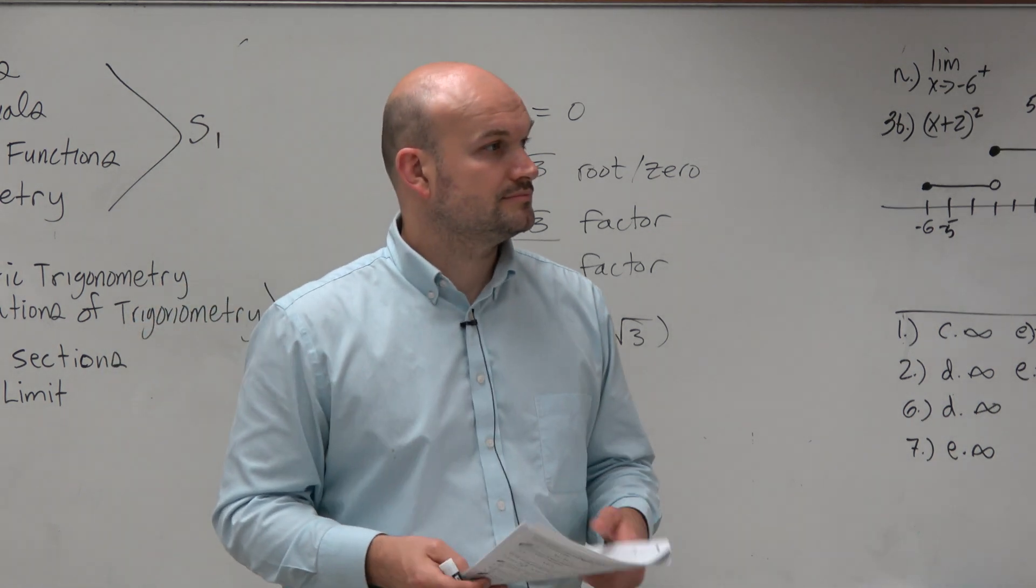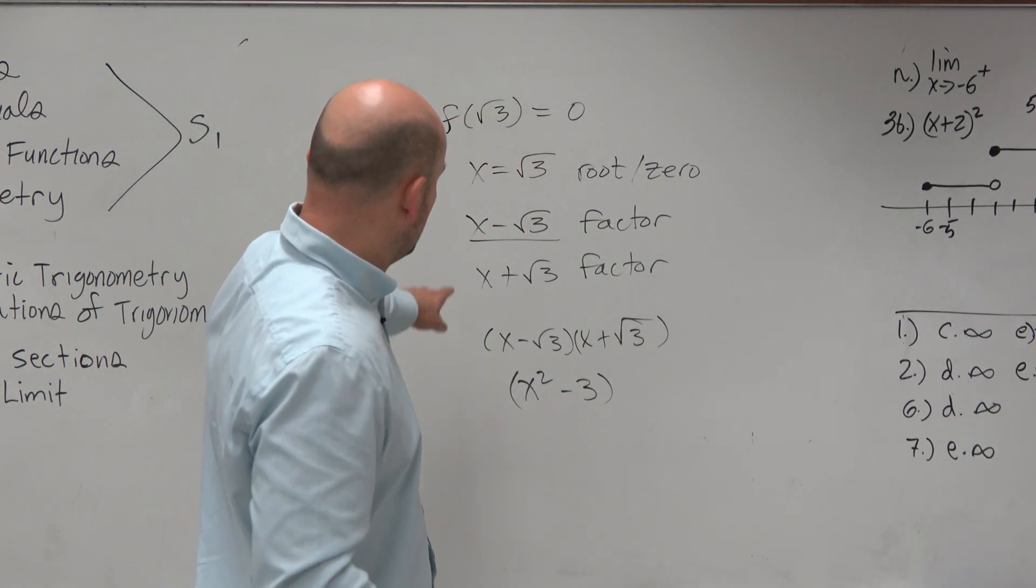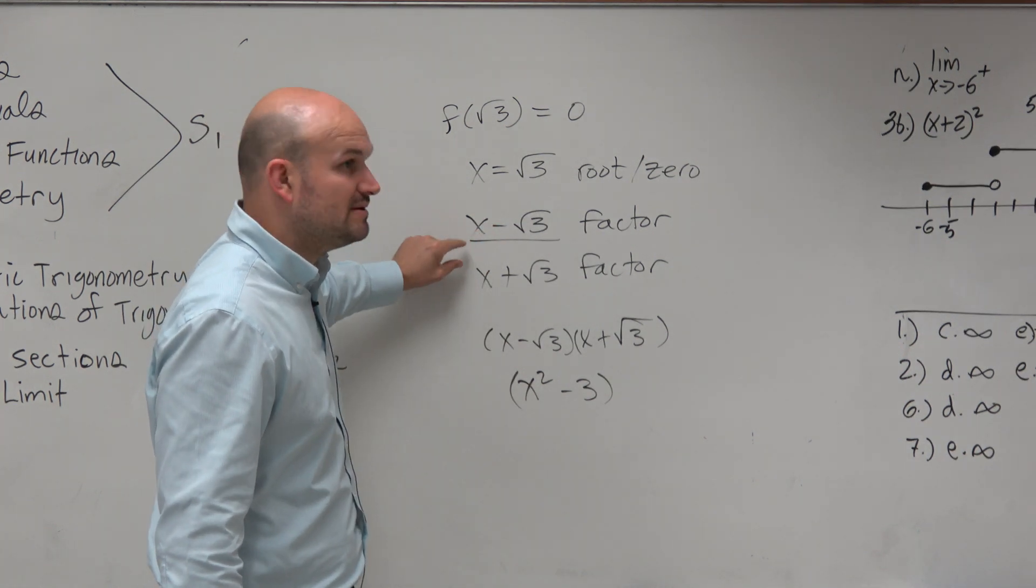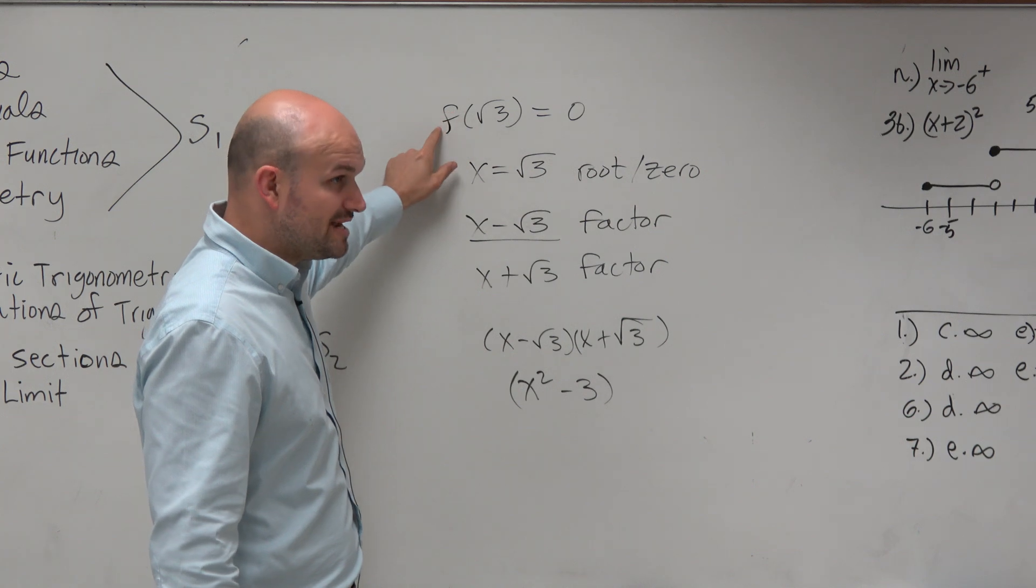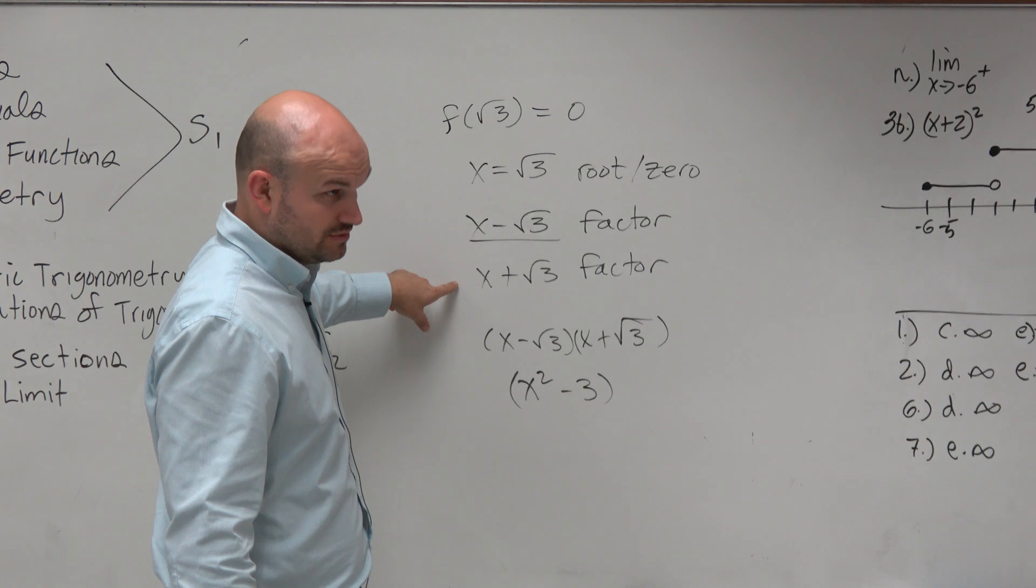But wait, what about why would it be like negative and a plus? Can't it be just like negative, negative? No, we already have one factor, and we already have another factor. We know these have to be factors. Given this information, this has to be true. This has to be true. This has to be true. Correct?